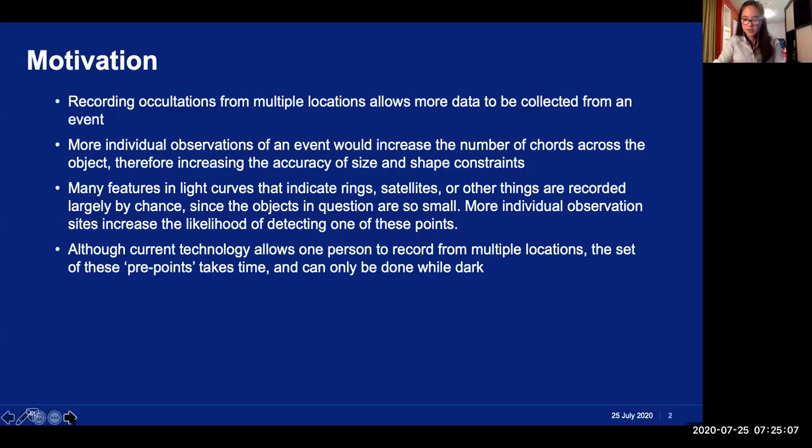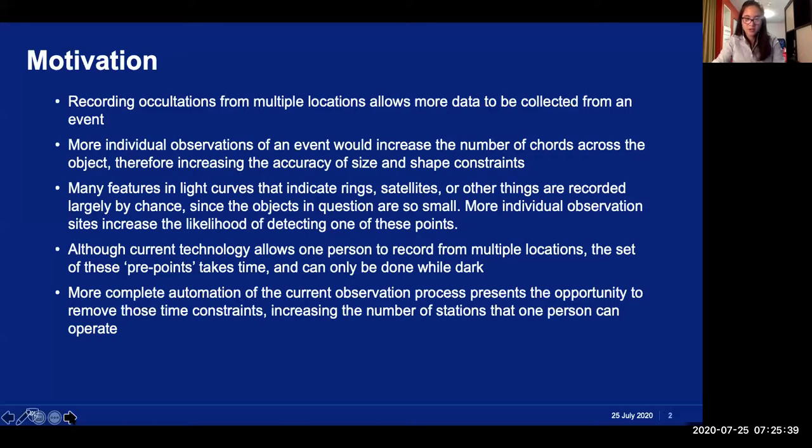However, one of the greatest constraints for increasing occultation data collection is the number of people who are both available and willing to conduct observations. Currently, one person can record from multiple locations using pre-points, but the setup of those requires time and it also has to be done in the dark. Both of those requirements places a limit on the number of stations which one person could reasonably operate for any event. So the goal of my project this year was to create a method of automatically observing an occultation. This would make collecting data on occultation events more efficient by allowing one person to record from many different locations without the time constraints which are currently required to do so.